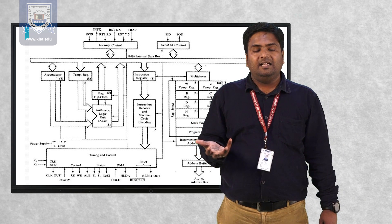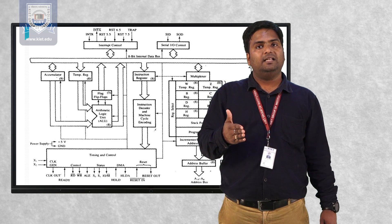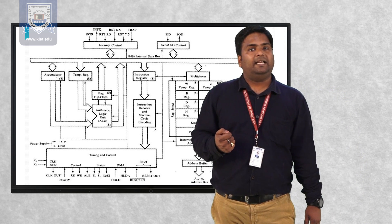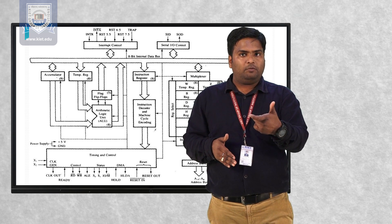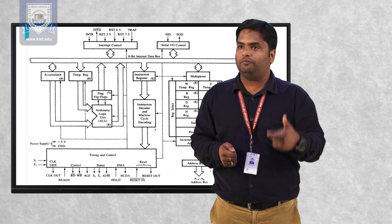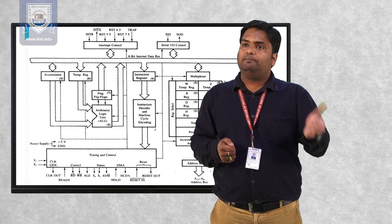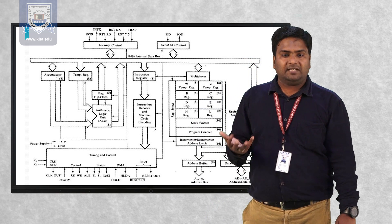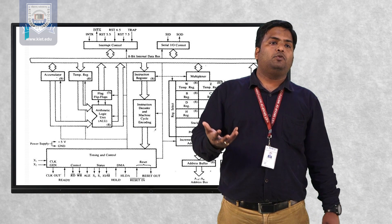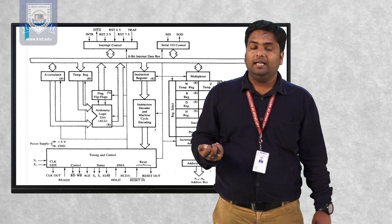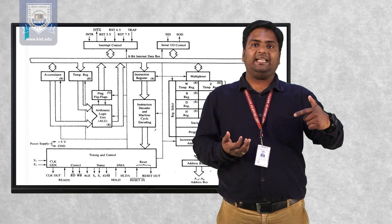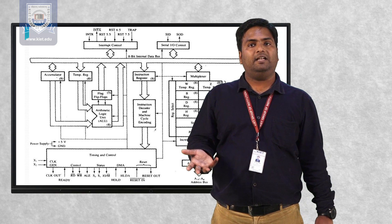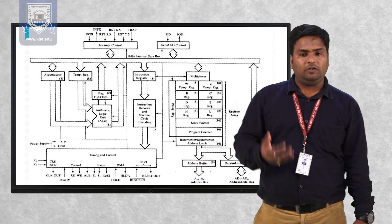The auxiliary carry flag is set when, during the addition of two 8-bit numbers, there is a carry after the 4th bit. The parity flag checks 8-bit binary information — if the number of 1s is even, the flag is 1; if odd, the flag is 0. The carry flag is set when, after addition of A and B, there is a carry — carry flag is 1 if there is a carry, and 0 if there is none.